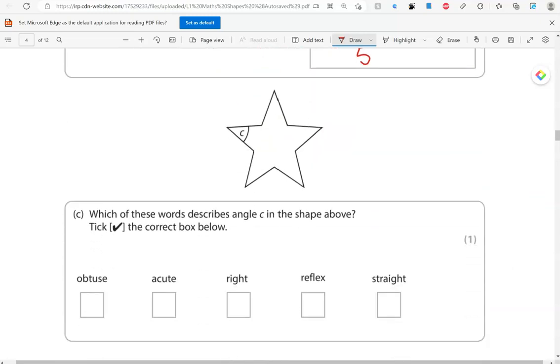Which of these words describes angle C in the shape above? Tick the correct box below. So, angle C, that is less than 90 degrees. So, it's an acute angle. Just like we describe little kids as cute. So, a small angle. Less than 90 degrees. Obtuse looks like so. You can link it with obese perhaps. So, it's greater than 90 degrees. Right angle. Reflex. So, that's even greater than 180, but less than 360. And straight, like a straight line. Half of a circle, like a semicircle.